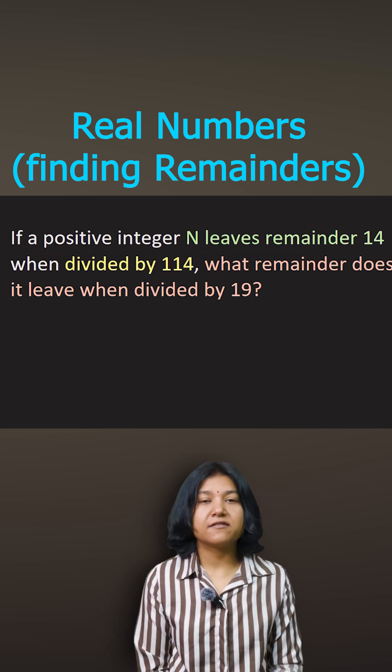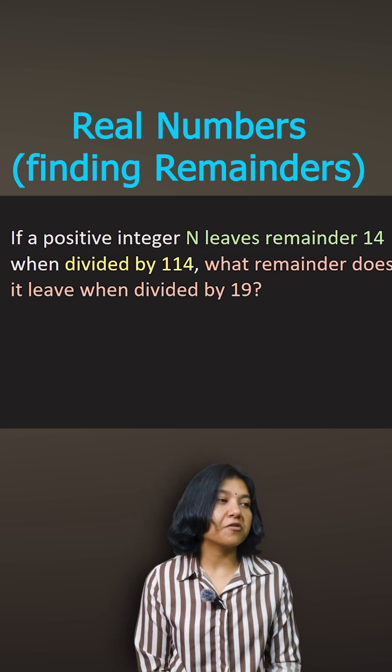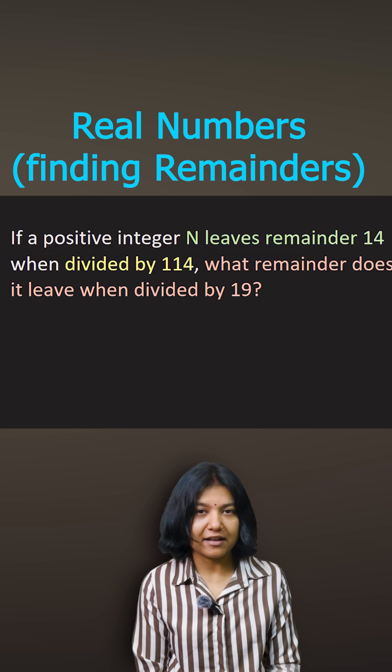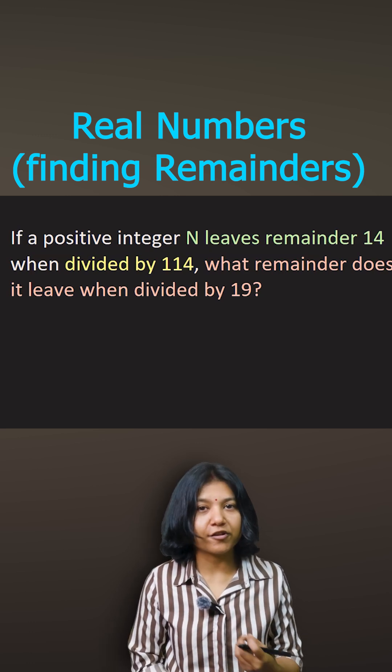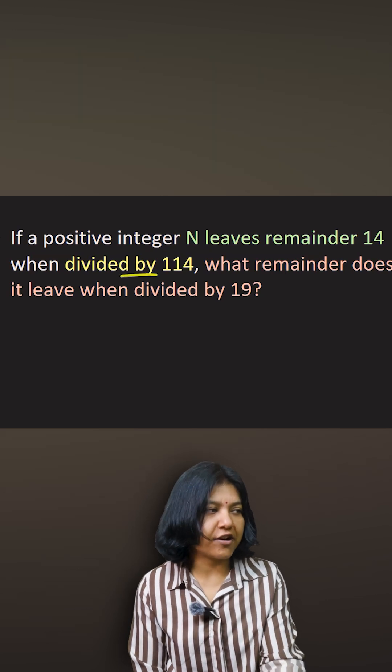If N leaves remainder 14 when divided by 114, what remainder does it leave when divided by 19? It's an interesting question because there is no pattern you can see, but of course there is something. When divided by 114, you look at this divisor.